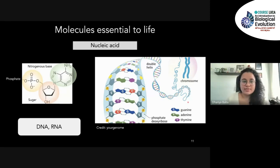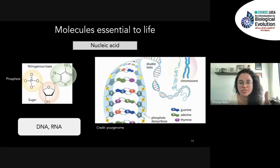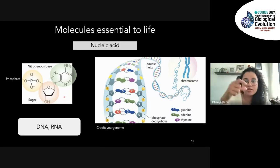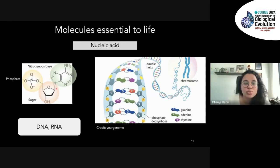Nucleic acids are the primary information-carrying molecules in all living things. RNA and DNA are the two main types, and they carry all the genetic information. That genetic information is used to make proteins in our cells — the central dogma of life with transcription and translation. Nucleotides make nucleic acids, composed of phosphate groups, sugar groups, and nitrogenous bases. These individual chemical groups are important when thinking about what molecules to produce in origin of life research.